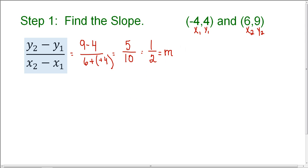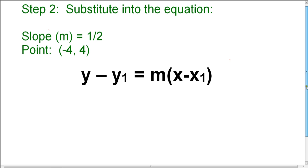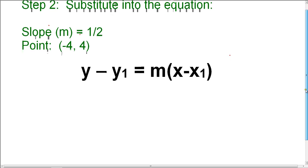Now that I know the slope, I can continue using point-slope form. So we know the slope is 1 half, and we know the point that we're going to use is negative 4, 4. And we're going to go ahead and substitute into the equation.